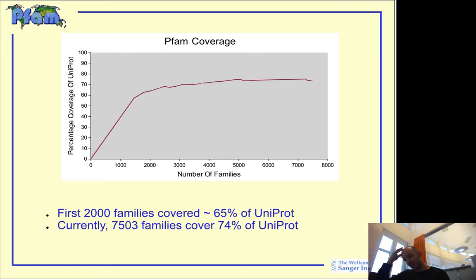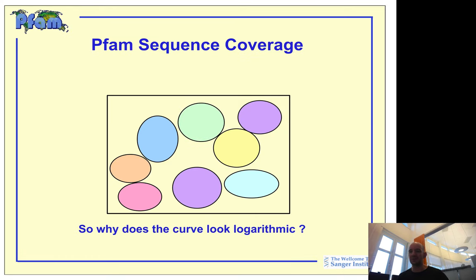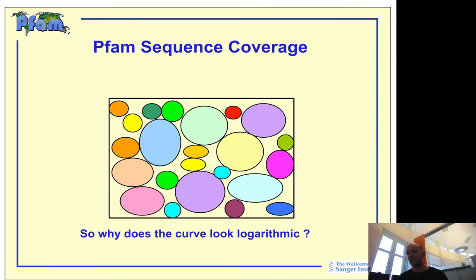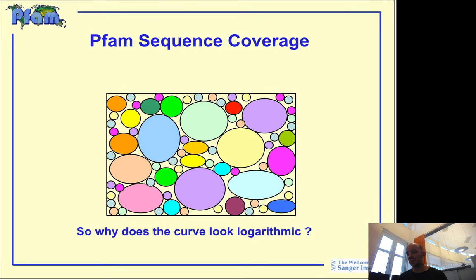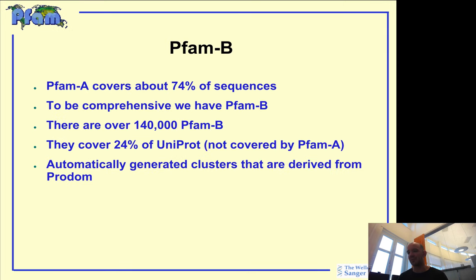As mentioned in earlier lectures, PFAM has about 75% coverage, and has had that for a long time. Today it has about 16,000 families. Basically, why don't you get any further? Because there are a lot of big families, and then the families get smaller and smaller — you have barely small families to cover everything else — so you will never be able to cover it all.